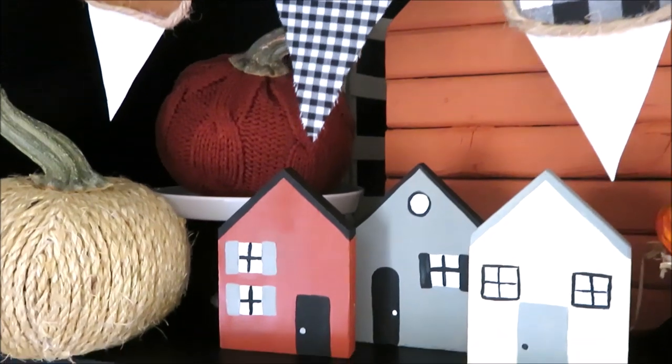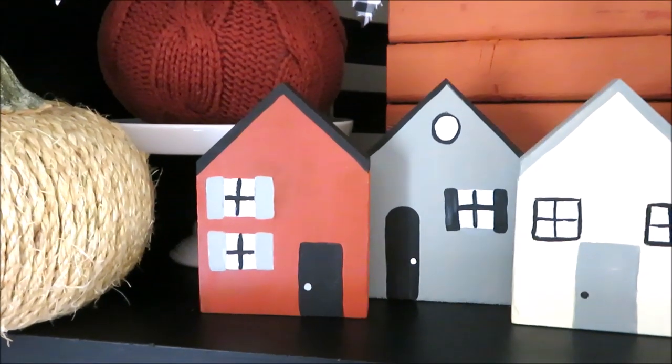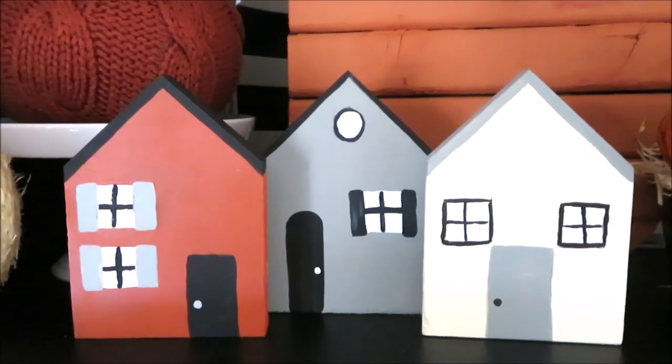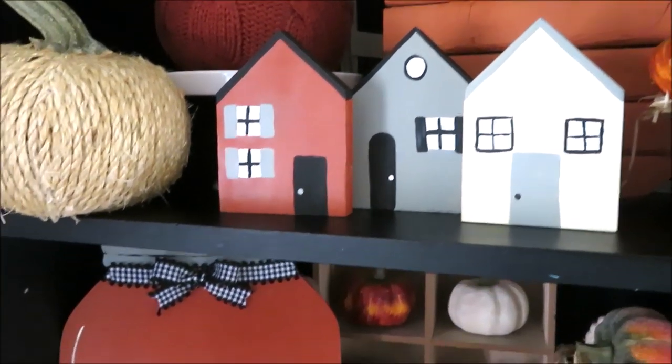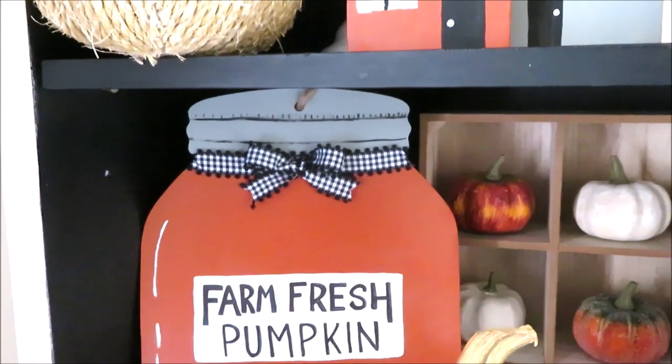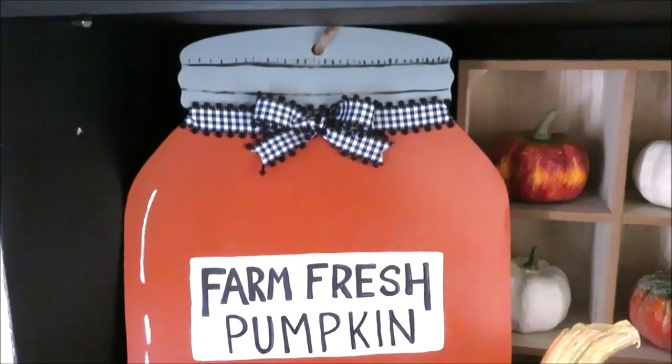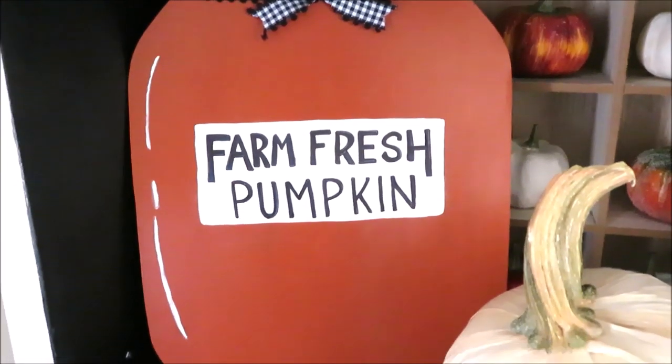Hi friends, it's Auntie Cuckoo and today I'm bringing you two DIYs as part of our series Fall in July. Today we'll be making some adorable fall inspired wooden houses and this jar of farm fresh pumpkin.